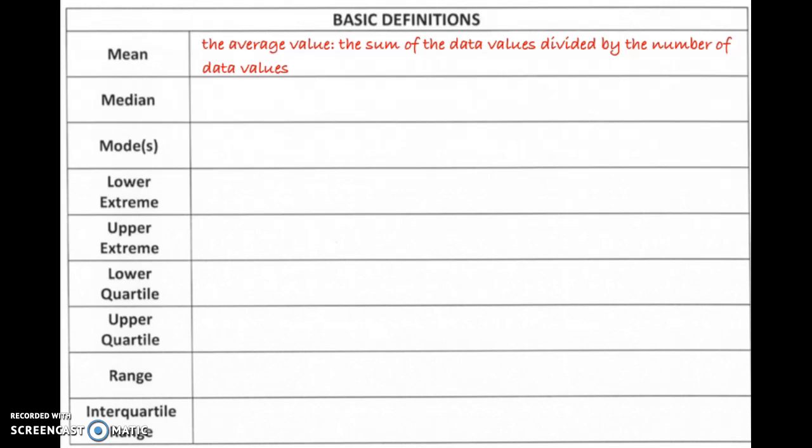The first one is the mean, and you've heard of the mean before. It's just the average value. When you add all the data values up and divide by how many there are, you get the mean.